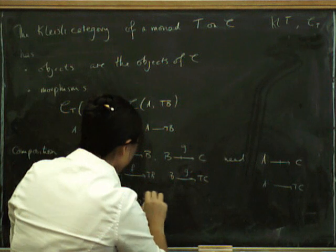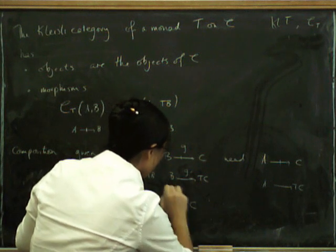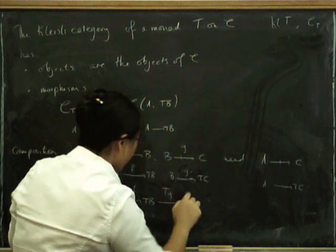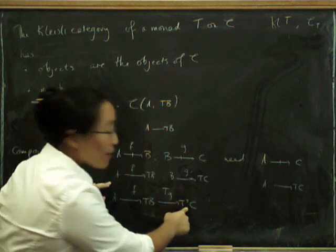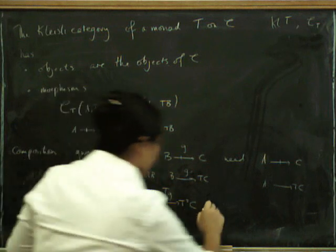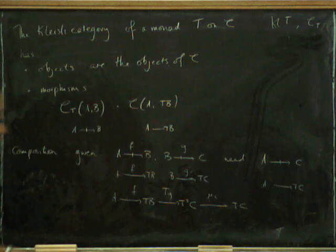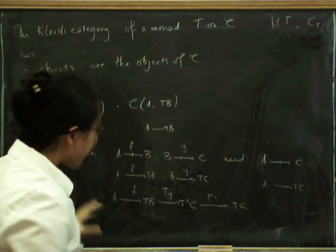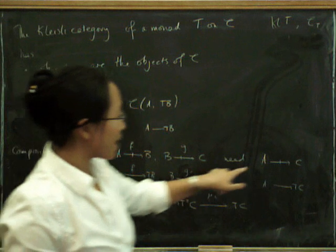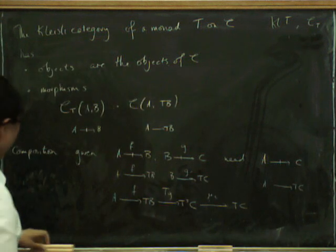But what we can do is we can hit this with T. We hit it with T, and now we haven't quite landed in the right place, but μ is now going to come to the rescue. Because if we stick μ on the end here, it's going to take us back down to TC. So we've got a map from A to TC, which is exactly what we wanted because that's the form of a map A to C in the Kleisli category. Okay, so that's what composition is.